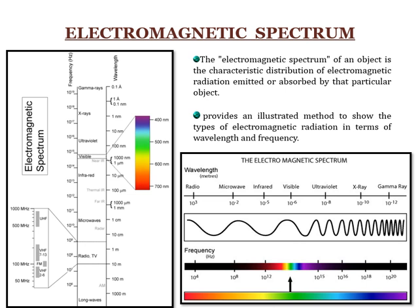An electromagnetic spectrum of an object is the characteristic distribution of electromagnetic radiation emitted or absorbed by that particular object. The electromagnetic spectrum is a combination of various energy sources like radio waves, microwaves, infrared rays, visible region, ultraviolet radiation, X-rays, and gamma rays. These energy sources have stipulated frequencies and wavelengths, and depending upon those wavelengths and frequencies, these energy rays are defined and categorized into various wave types.